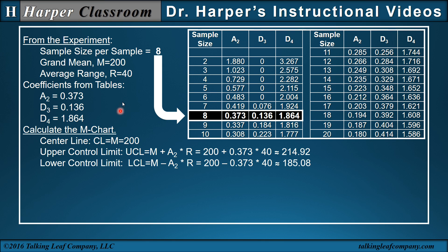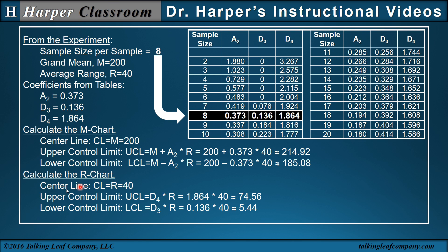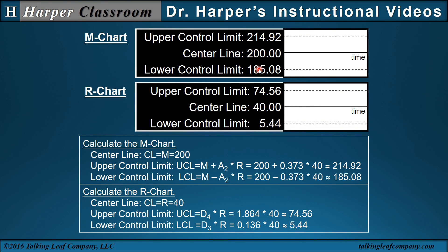To calculate the M-chart, the centerline is the grand mean of 200, and the upper and lower control limits are the grand mean plus or minus A2 times the range: 200 plus or minus 0.373 times 40, giving 214.92 as the upper control limit and 185.08 as the lower control limit. For the R-chart, the centerline is the average range of 40. The upper control limit is D4 times the range — 1.864 times 40 — which is 74.56. The lower control limit is D3 times the range — 0.136 times 40 — which is 5.44.